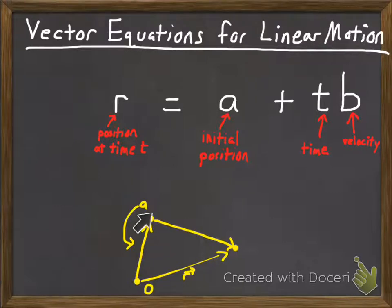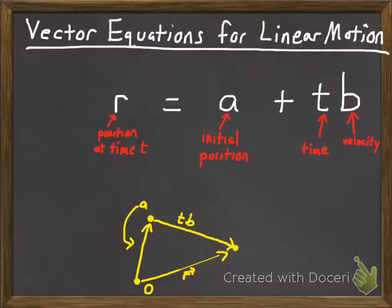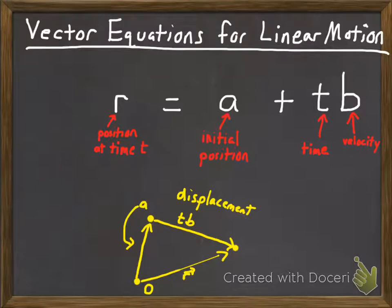If you start somewhere and want to figure out where you'll end up, it depends on how long you're traveling and in which direction — and the velocity gives you that direction. The vector t times b represents the displacement vector for the object. To find where it's located, you need to know how far and in which direction it was displaced. That's how the equation works.